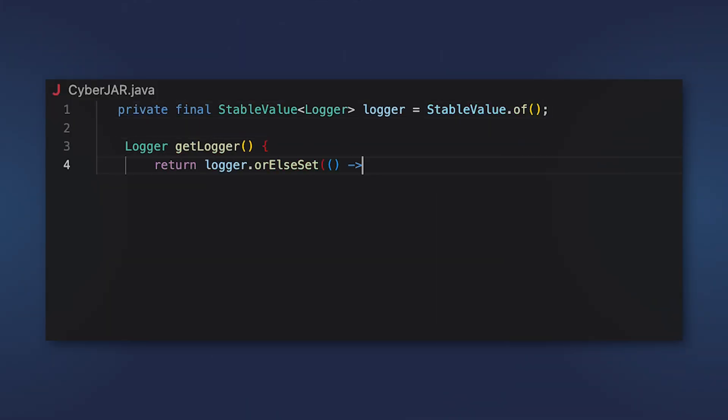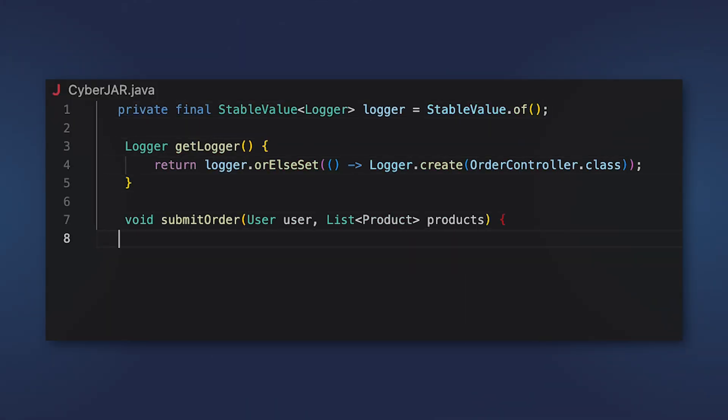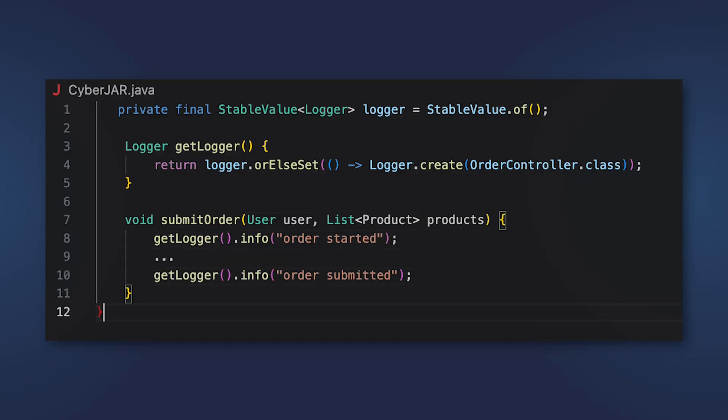Flexible at start and locked solid when you apply it — that's stable values, ladies and gentlemen. Stable values are objects holding a single data value; for instance, a logger. A stable value is initialized before its content is first retrieved. After that, it is immutable. This way, they improve the start-up time of Java apps thanks to deferred initialization and offer the same reliability as final fields.